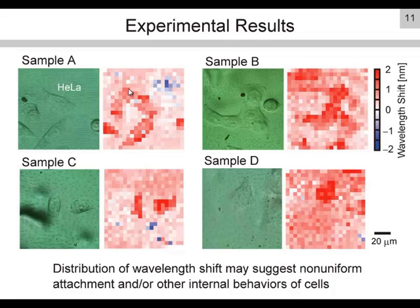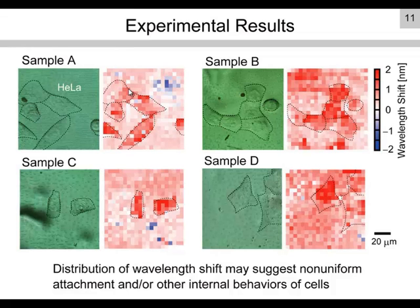Between samples, cell images are slightly different. For example, one shows a larger red shift at the edge of the cell, while another shows a large red shift at the center. Each image is superimposed with the borderline of the cell from the optical micrograph. One image shows the same boundary in both the optical micrograph and the red shift pattern, but another shows an unclear pattern compared with the micrograph. These differences suggest non-uniform attachment and some internal behaviors of the cells.